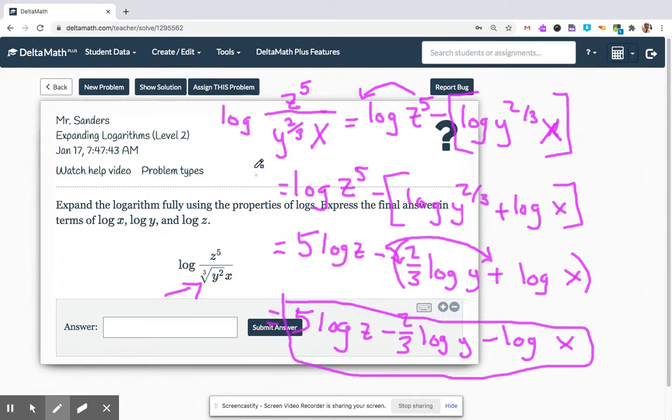Now, I just wanted to show you what I was talking about. So if I wanted to rewrite this in terms of negative exponents, so that all we're doing is multiplying. So that's z to the fifth, 2 thirds is on the bottom. If I move it up front, up top, it becomes negative 2 thirds. And if the x moves up, it becomes x to the negative 1.